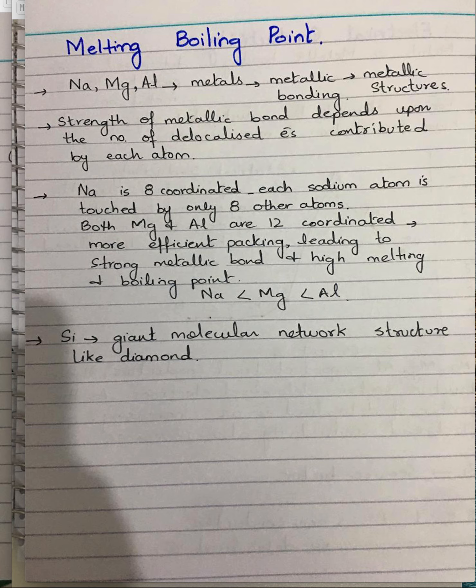Comparing sodium, magnesium, and aluminium, aluminium will have the highest melting and boiling point, followed by magnesium and then sodium. Then comes silicon, which has a giant macromolecular structure just like diamond. It is a semi-metal, but because it has a giant network of covalent bonds, more energy is required to break it, and that's why silicon has the highest melting and boiling point among the first four Period 3 elements.